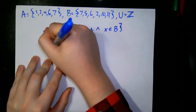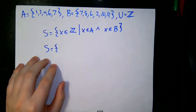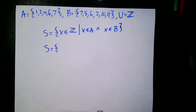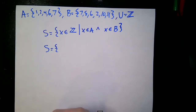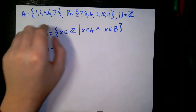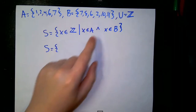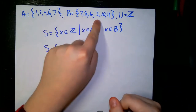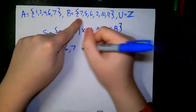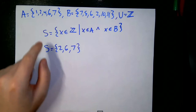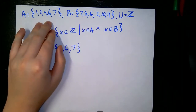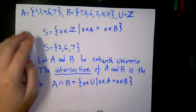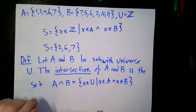We can write out the elements of S to double-check. Integers not in A or B won't be included, so we only focus on those in A and B. Checking: 1 is in A but not B; 2 is in both A and B — include it; 4 is in A but not B; 6 is in both A and B — include it; 7 is in both A and B — include it. We don't need to check remaining B elements since they weren't already seen in A. So S = {2, 6, 7}.